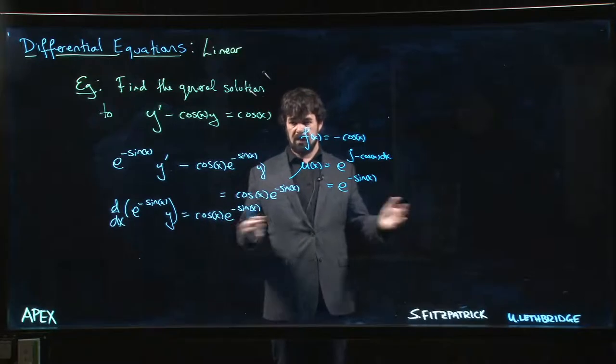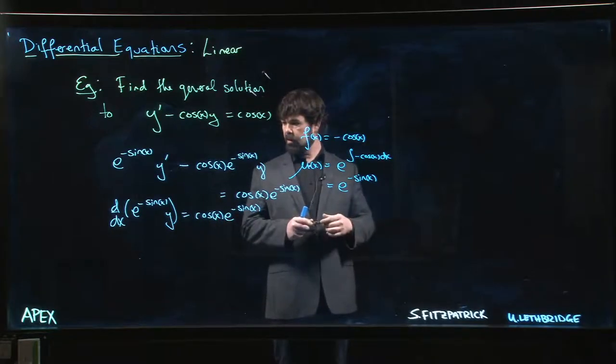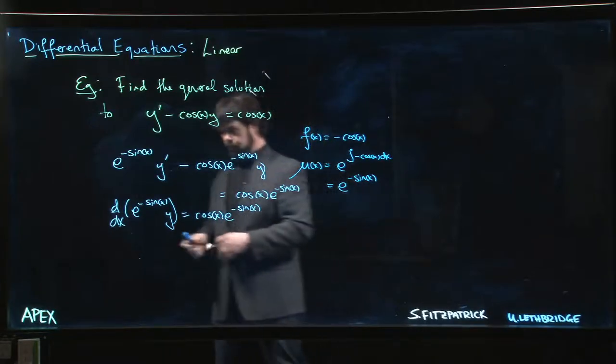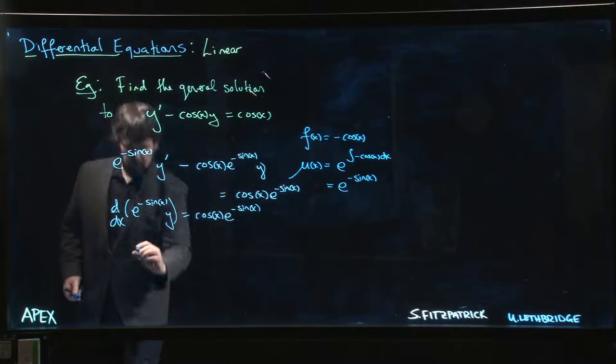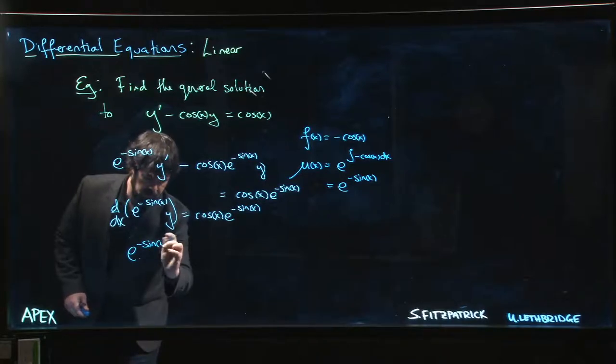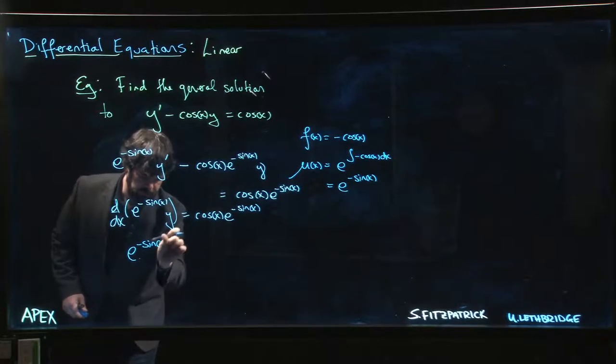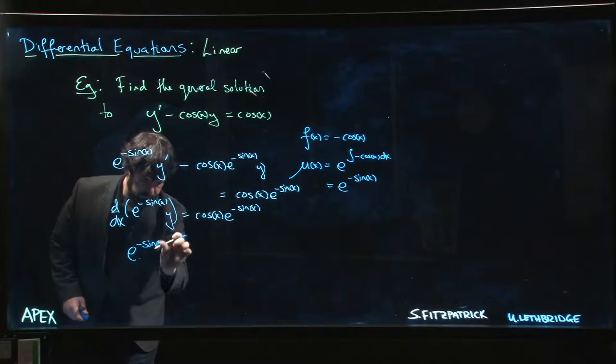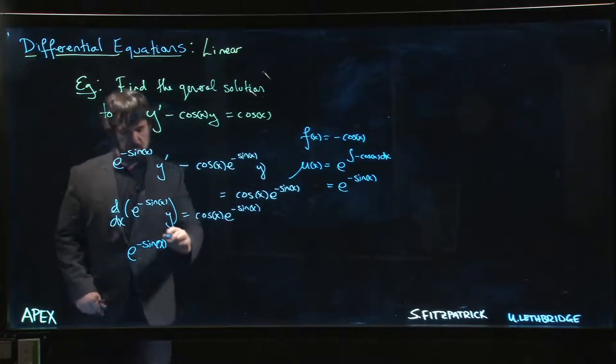So we integrate. We take the antiderivative on both sides. On this side we simply get e to the minus sine x times y.